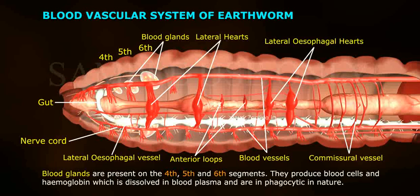Earthworms lack specialized breathing devices. Respiratory exchange occurs through the moist body surface into the bloodstream.